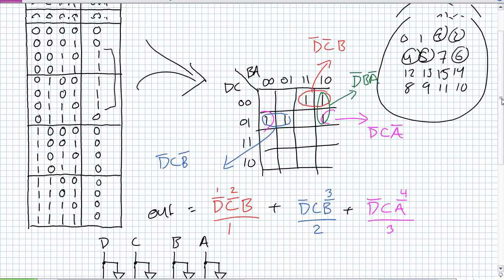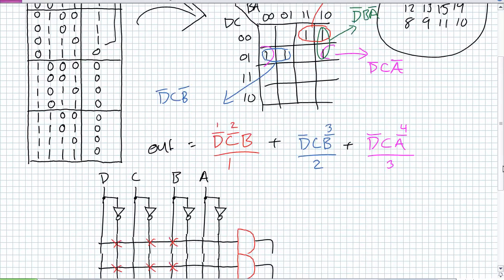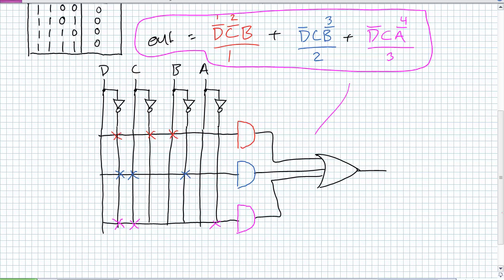A pretty good example of what I'm expecting you to do from beginning to end. Given this description — make me a 2-to-6 detector — what I want you to come up with is the output expression, the fully minimized SOP expression. We may take the next step to implement this thing by drawing a schematic, physically hooking things up, or even programming it into HDL.